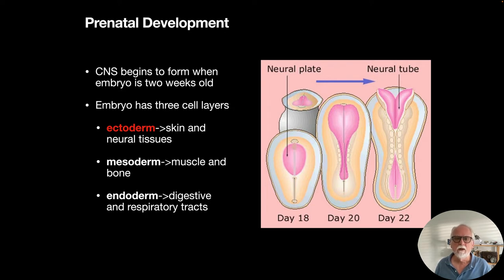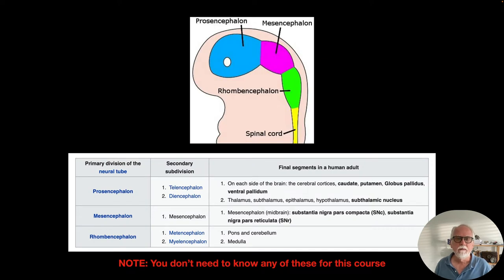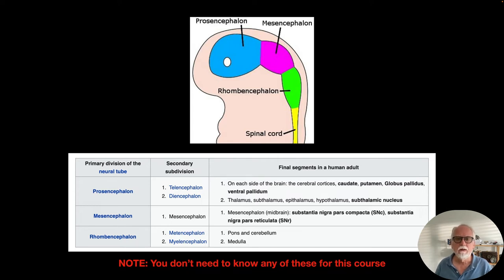The endoderm is where the digestive and respiratory tracts develop from. The ectoderm, originally called the neural plate, wraps around between days 18 and 22 to form the neural tube, which is where all brain and spinal cord development occurs. The neural tube has three main parts — the proencephalon, mesocephalon, and rhombencephalon — and then secondary divisions. For instance, the proencephalon becomes the cerebral cortices, caudate, putamen, thalamus, and hypothalamus.